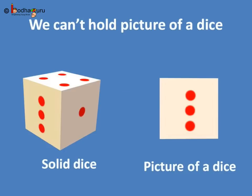Look, here is a dice. We can hold it and turn it around to see its different surfaces. But we cannot hold the picture of a dice and do the same, can we? No. But why?